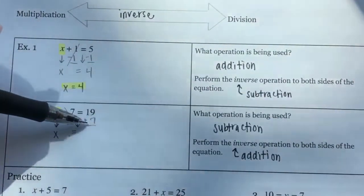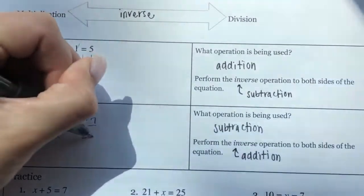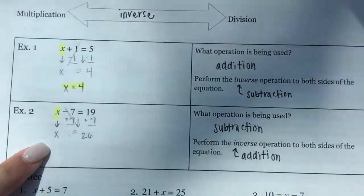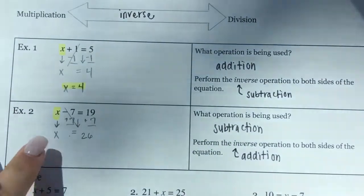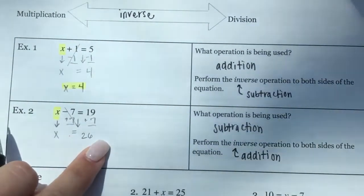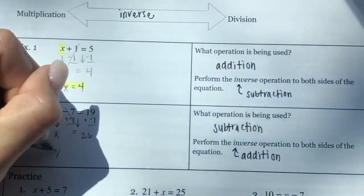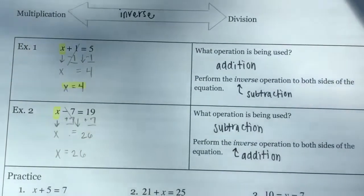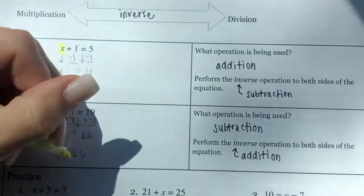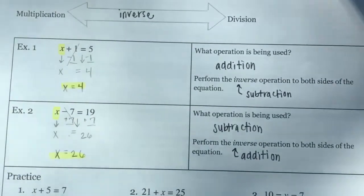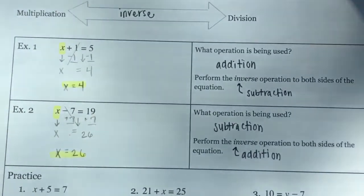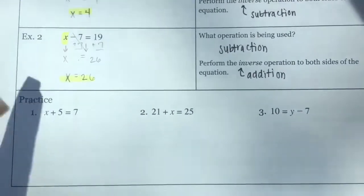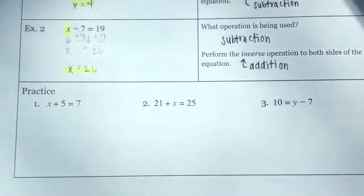Then 19 + 7 is 26. We have X by itself and the right side is simplified, so X = 26 is our solution to that equation. Now we have three practice problems.